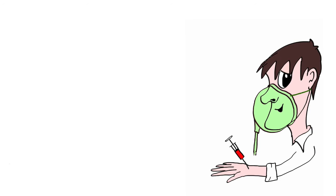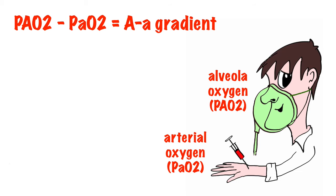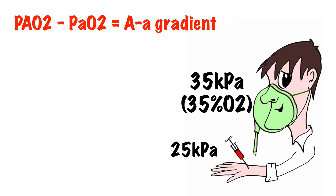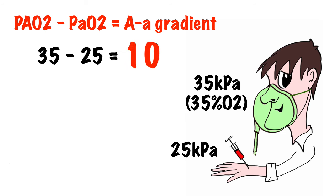We call the gap between what the patient breathes in and the arterial partial pressure of oxygen the AA or alveolar-arterial gradient. We would expect the gradient or drop-off between the partial pressure of alveolar oxygen breathed in to the partial pressure of arterial oxygen we sample to be approximately 10.